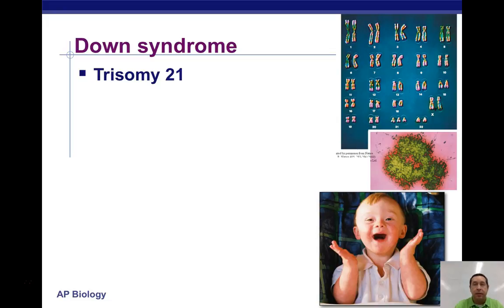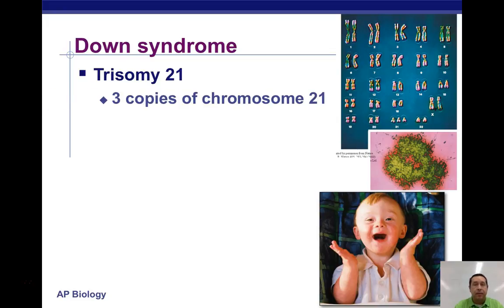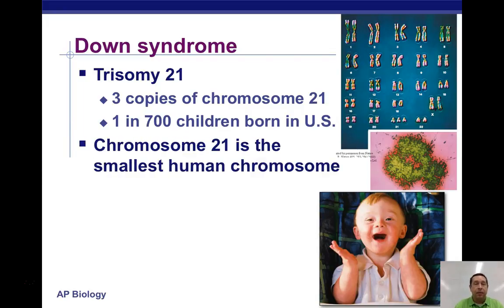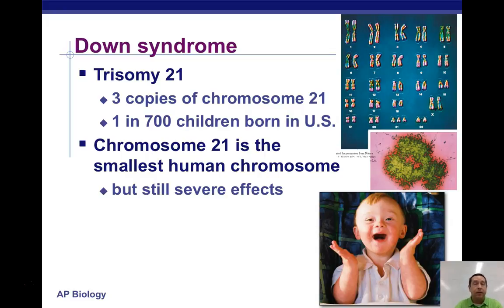The most common case in humans is trisomy 21. You can see that in the karyotype — three copies of chromosome 21. One in 700 children born in the U.S. will have Down syndrome. Chromosome 21 is the smallest human chromosome, which we think plays a role in why they can survive with the extra copy. It can have pretty severe effects — a very broad range, from mild to profound mental impairment. It can also cause heart problems, cleft lips and cleft palates, and certain facial features.